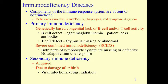Immunodeficiency diseases decrease the body's immune power. SCID (Severe Combined Immunodeficiency) is caused by deficiency of the enzyme adenosine deaminase (ADA), which is involved in maturation of T and B lymphocytes. This was the first disease treated with gene therapy, successfully used on a four-year-old girl. AIDS is also in this category — it is acquired and therefore classified as secondary immunodeficiency.